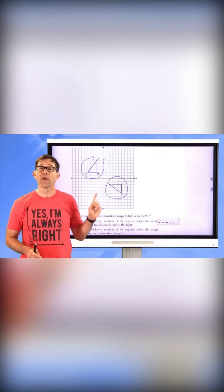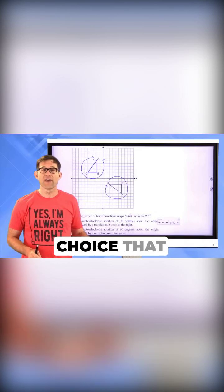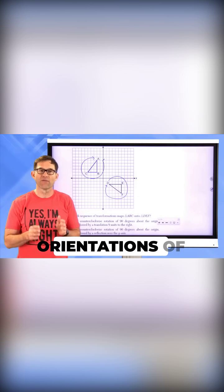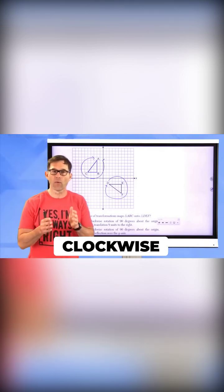So my point is, if I see any choice that has just one reflection in it, I know that's incorrect because the orientations of the letters stayed in clockwise direction.